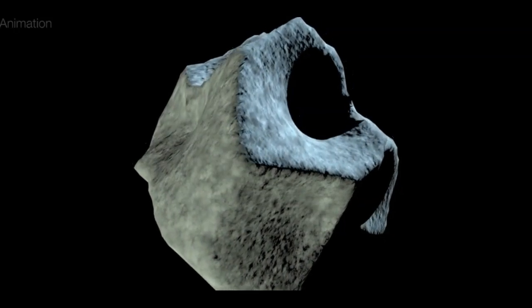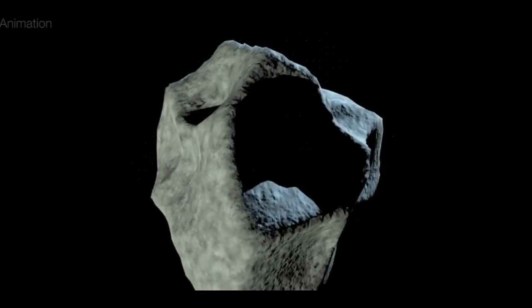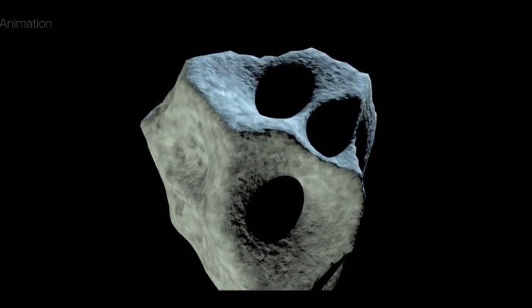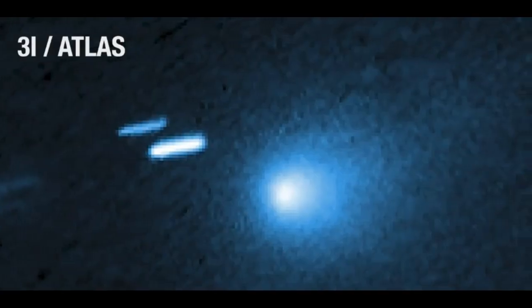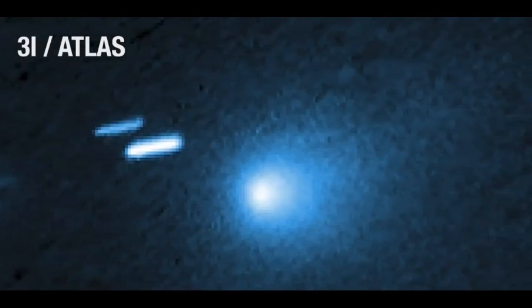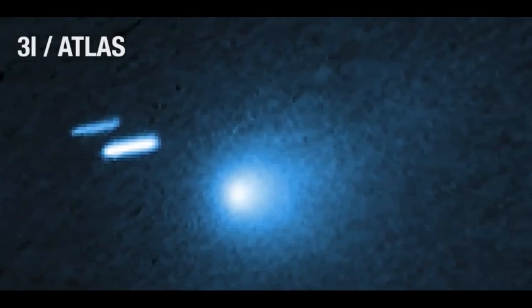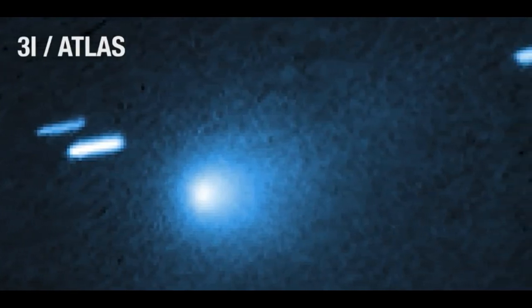Its estimated diameter is no bigger than 3.5 miles across, but potentially as small as 1,000 feet across. Hubble captured a dust plume ejected from the sun-warmed side of the comet and the hint of a teardrop-shaped dust tail streaming away from the nucleus.